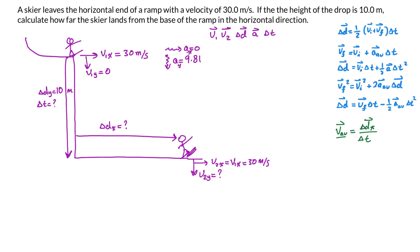In the y direction I have v1y, delta dy, and the acceleration. Whenever you have three pieces of information you can always find the other two. What I want to find is delta t, so I can then plug it into the x direction equation to find delta dx. Looking at the kinematic equations, I want an equation that contains delta d, v1, acceleration, and delta t, but not v2y. That equation is: delta d = v1 * delta t + ½ * a * delta t².